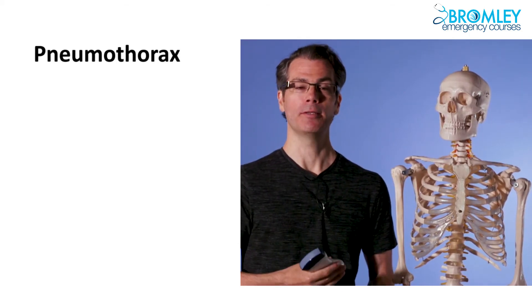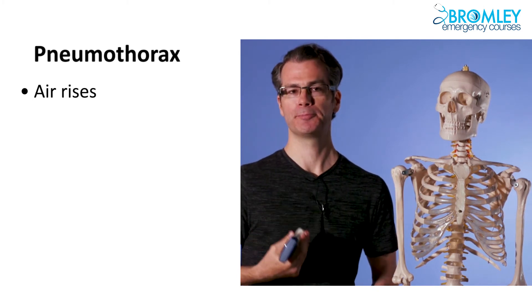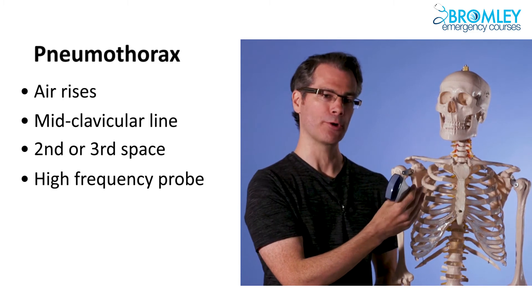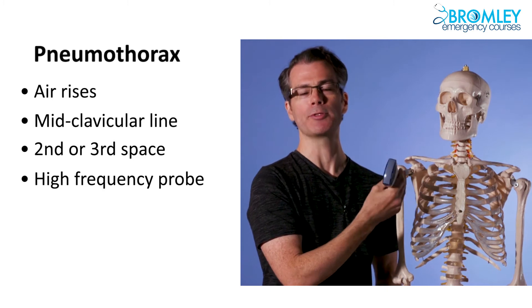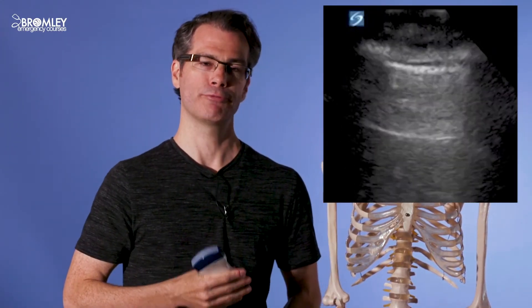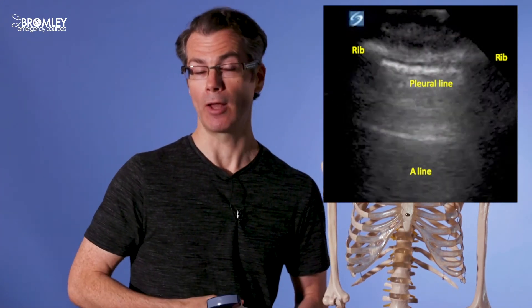The fifth and final component of the E-FAST exam is the assessment for pneumothorax — the anterior chest. Air rises to the highest point in the body, so in a supine patient we look at the anterior chest. Place the probe in the mid-clavicular line in the second or third intercostal space. You can use the low-frequency probe, but it's actually better to switch to the high-frequency probe for better resolution of the pleural line and to see pleural sliding better. Have the probe marker to the patient's head. You'll see ribs on either side of the image, the pleural line just deep to this, and another horizontal line deep to the pleural line called an A-line. An A-line is normal — it's just an artifact: the ultrasound beam bounces off the pleural line, goes back to the probe, then goes down again, bounces off the pleural line again, and the machine thinks it must be twice as deep, so it plots another line at the same distance again. This is just a normal artifact.